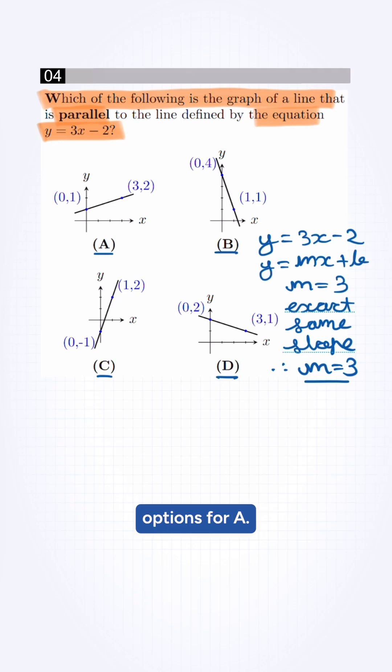We check for ABCD options. For A, the slope of that graph will be y2 minus y1 by x2 minus x1. This will be 2 minus 1 by 3 minus 0, which is 1 by 3, which doesn't match with our equation slope.